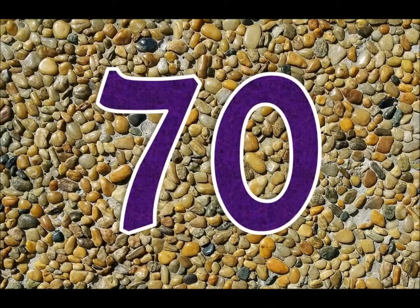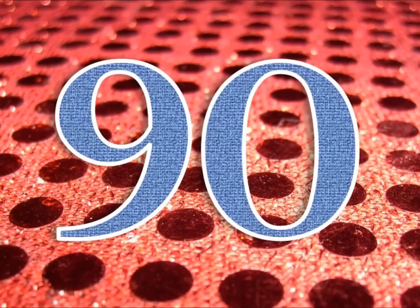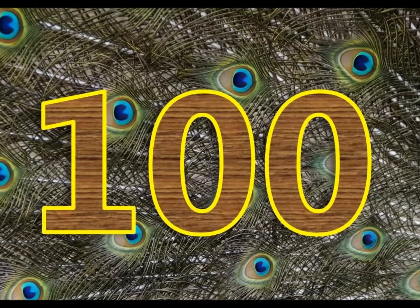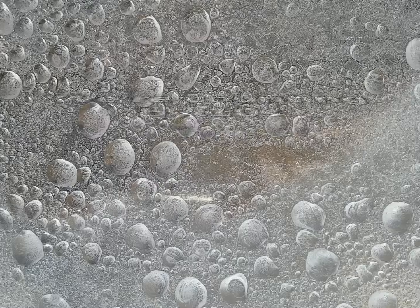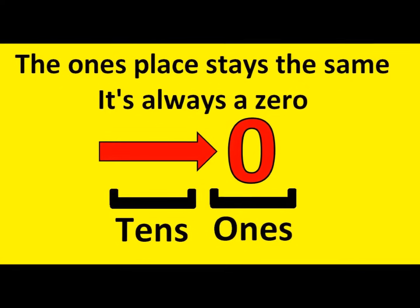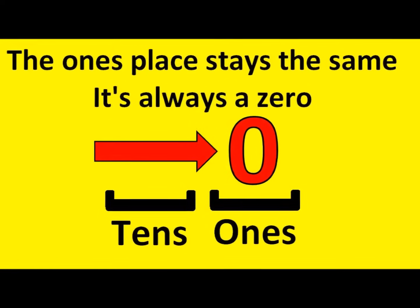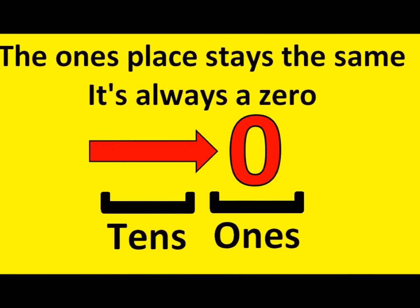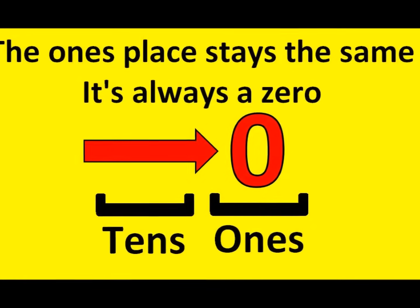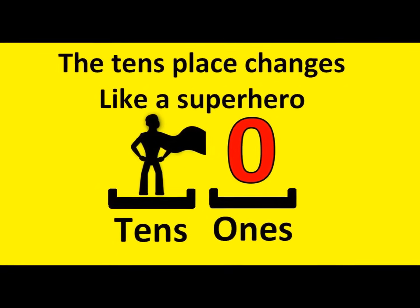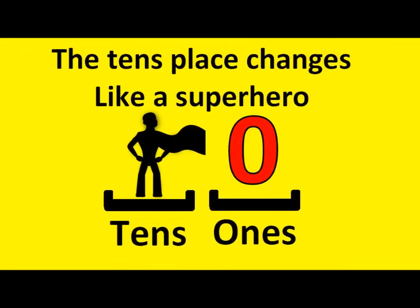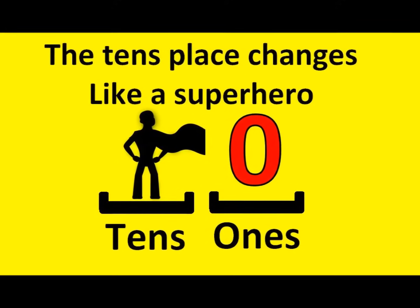10, 20, 30, 40, 50, 60, 30, 80, 90, 100. We're counting by tens. The ones place stays the same, it's always a zero. The tens place changes like a superhero.